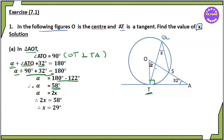So alpha is equal to 2x. That means 2 over 2x is equal to alpha, which is 58. So x is equal to 29. That's right.